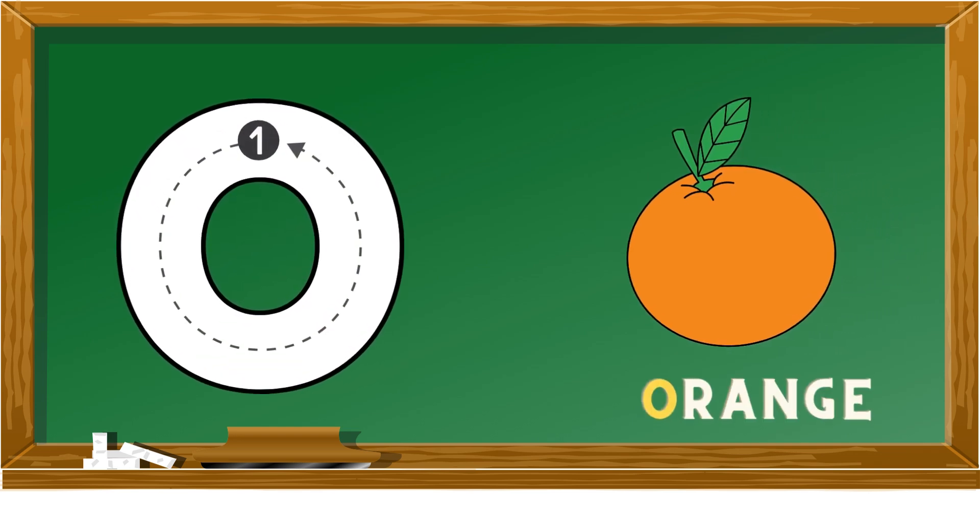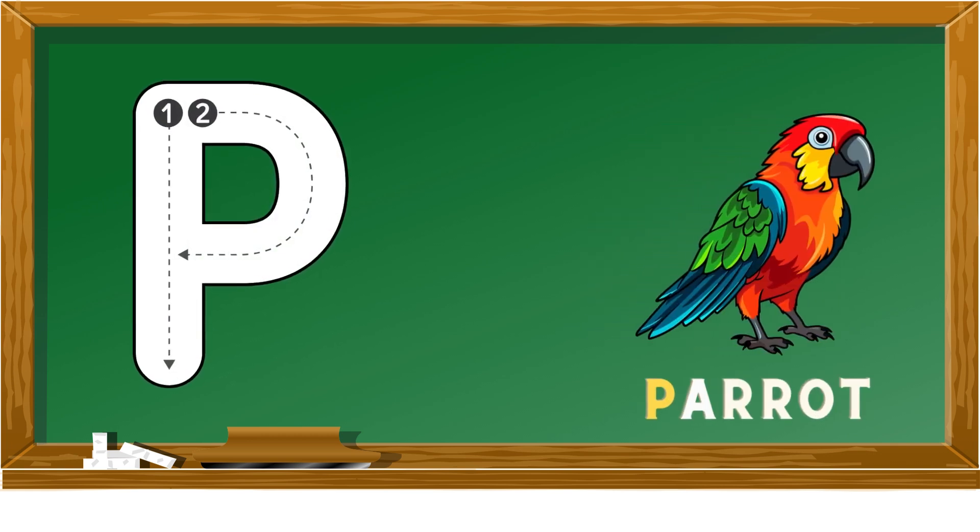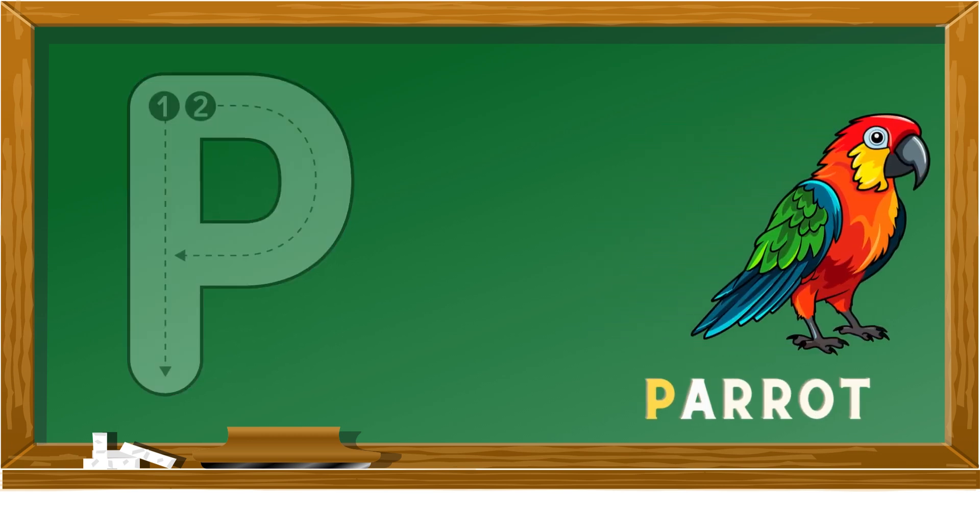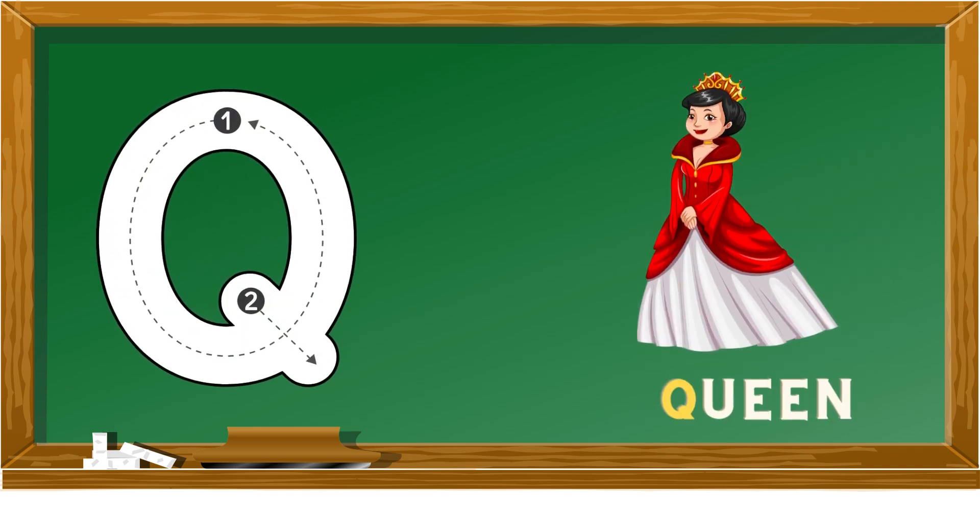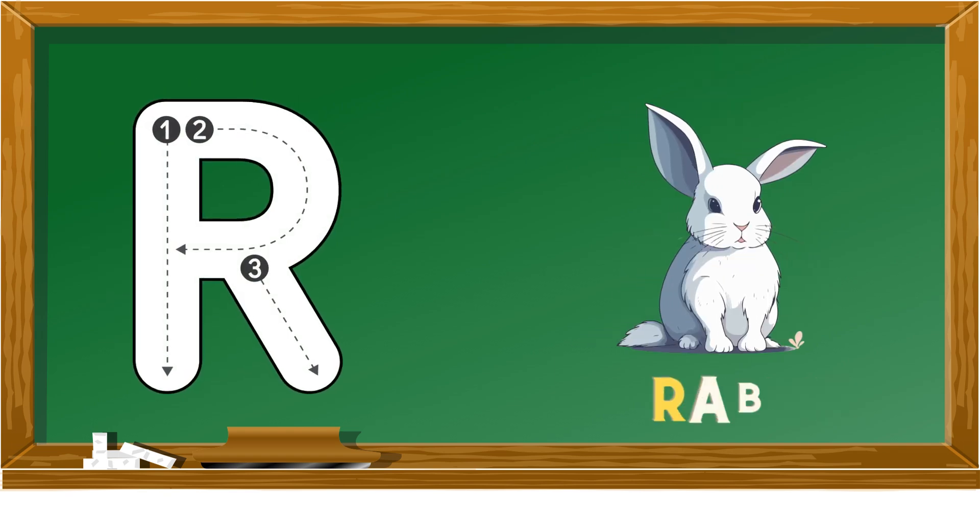P is for parrot, Q is for queen, R is for rabbit.